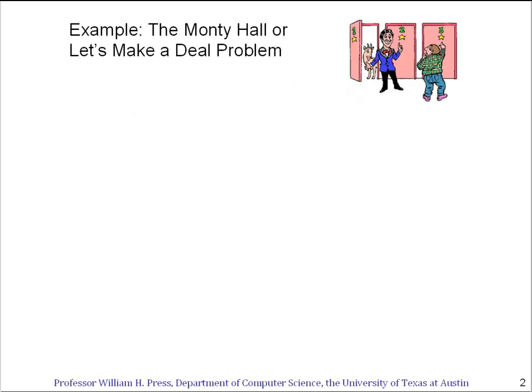Welcome back. This is just a short lesson to see if we really understand how Bayes' theorem applies to hypotheses — how it's a calculus of inference. The example we're going to talk about is what's called the Monty Hall problem, or the Let's Make a Deal problem.